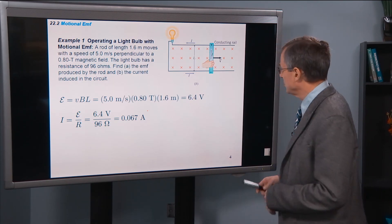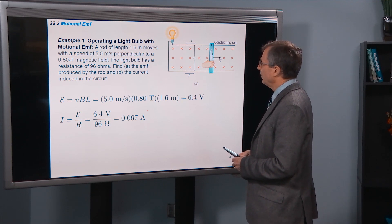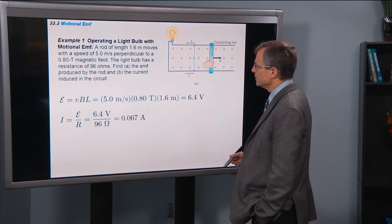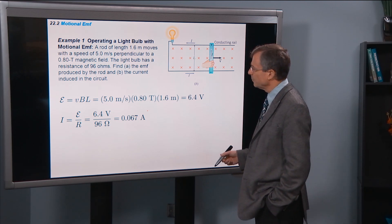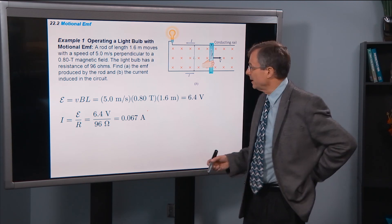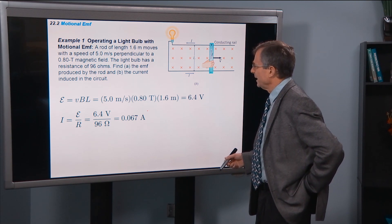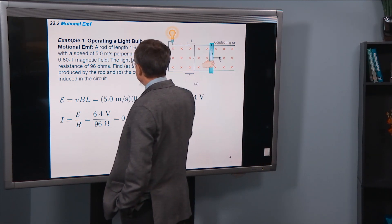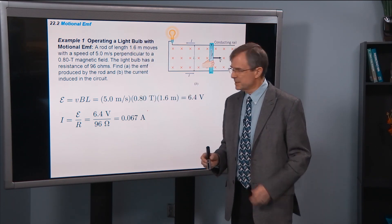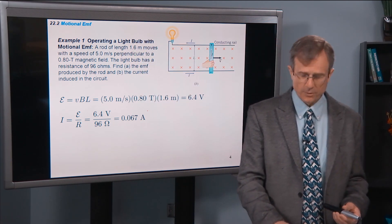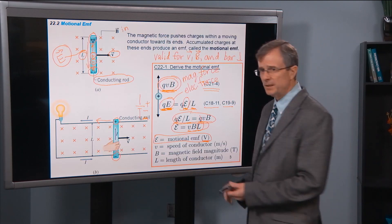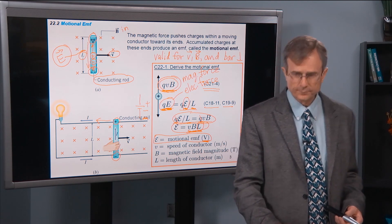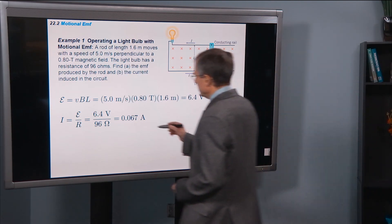So let's actually do an example. A rod of length 1.6 meters moves with a speed of 5 meters per second perpendicular to a 0.8 tesla magnetic field. And we have a light bulb with a resistance of 96 ohms. Find the EMF produced by the rod and the current induced in the rod. So let's go back here. The EMF is v times B times L.